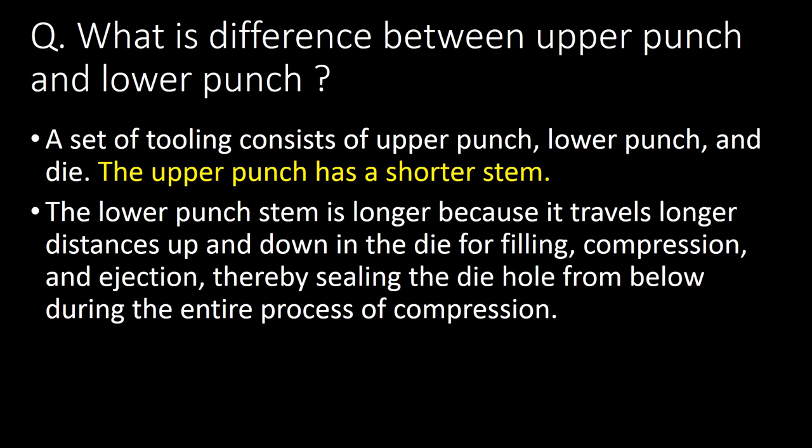What is the difference between upper punch and lower punch? A set of tooling consists of upper punch, lower punch, and die. The upper punch has a shorter stem. The lower punch stem is longer because it travels a longer distance up and down in the die for filling, compression, and ejection, thereby sealing the die hole from below during the entire process.